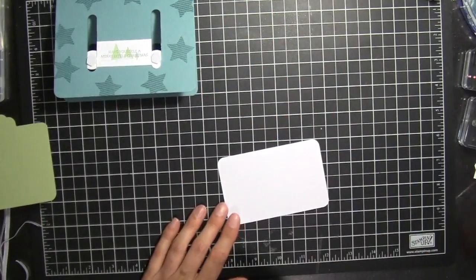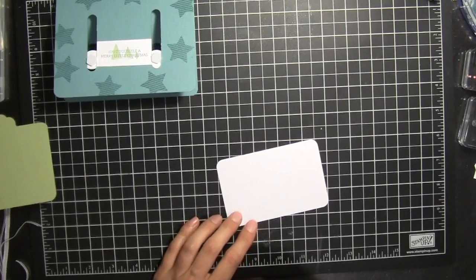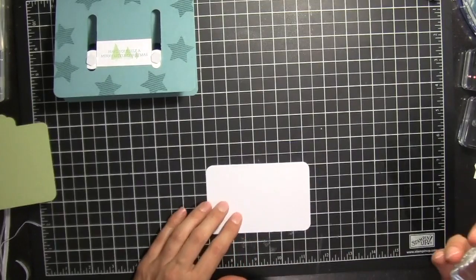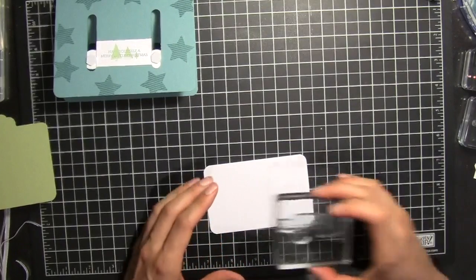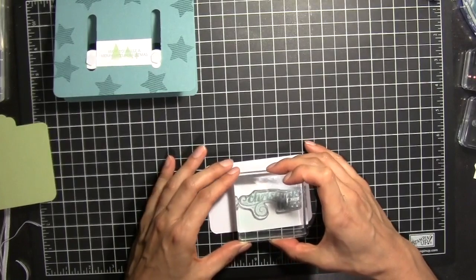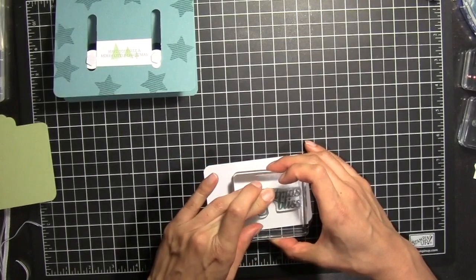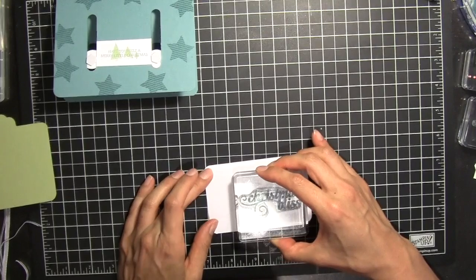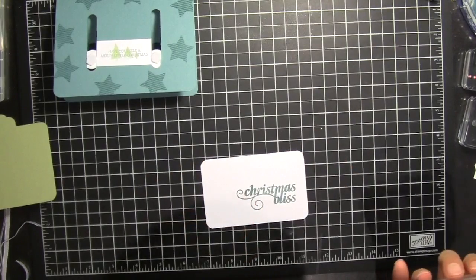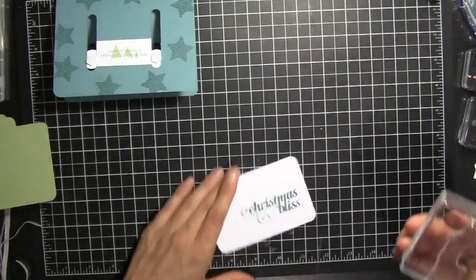And then next we're going to stamp Christmas Bliss with Baja Lagoon. We're just going to be careful with the photopolymer stamps. Oh it looks like I have a little piece of hair or something in there.